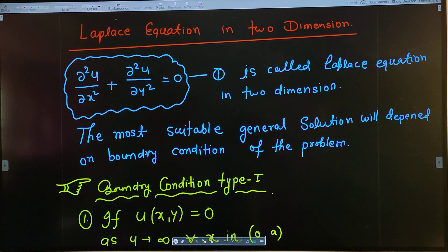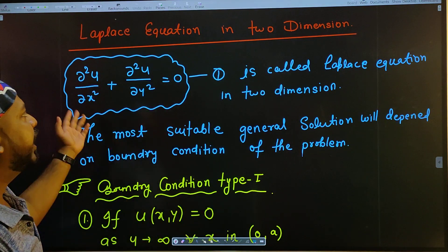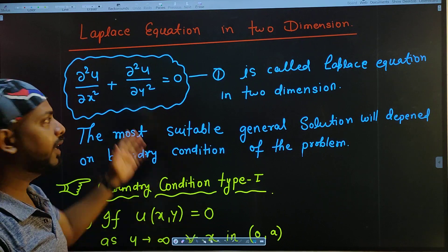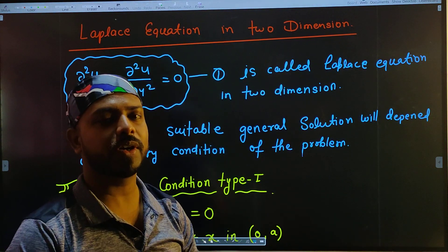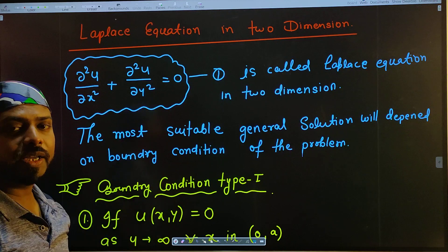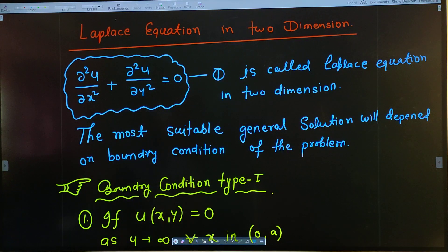Sometimes it can be given in terms of x and t, or y and t, or y and x — whichever variables you take, it doesn't matter. Here we are taking it in terms of x and y. So ∂²u/∂x² + ∂²u/∂y² = 0 is called the Laplace equation in two dimensions.